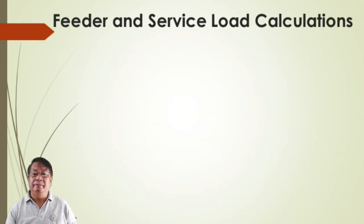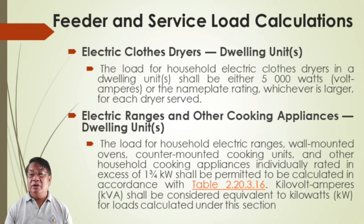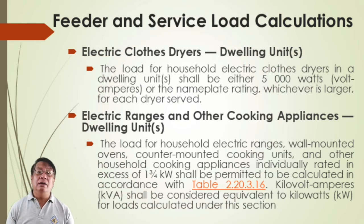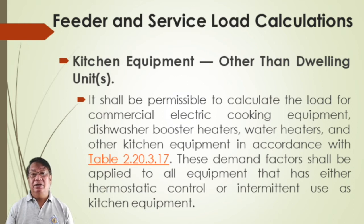For electric clothes dryers, to determine the feeder size, it shall be either 5,000 watts or the nameplate rating, whichever is larger, for each dryer served. If you know the actual load rating, try to use the actual load rating. The demand factor for kitchen heating appliances or specifically the electric range was shown previously.